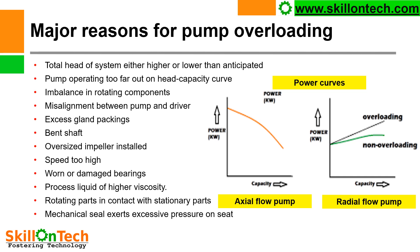Major reasons for pump overloading include: total head of system either higher or lower than anticipated; pump operating too far out on the head-capacity curve; imbalance in rotating components; misalignment between pump and driver; excess gland packings — if the pump stuffing box is filled with excessive gland packings, that will increase friction and cause the motor to draw more current; oversized impeller installed; speed too high; worn or damaged gears; process liquid of higher viscosity; rotating parts in contact with stationary parts; and mechanical seal exerting excessive pressure on seat.